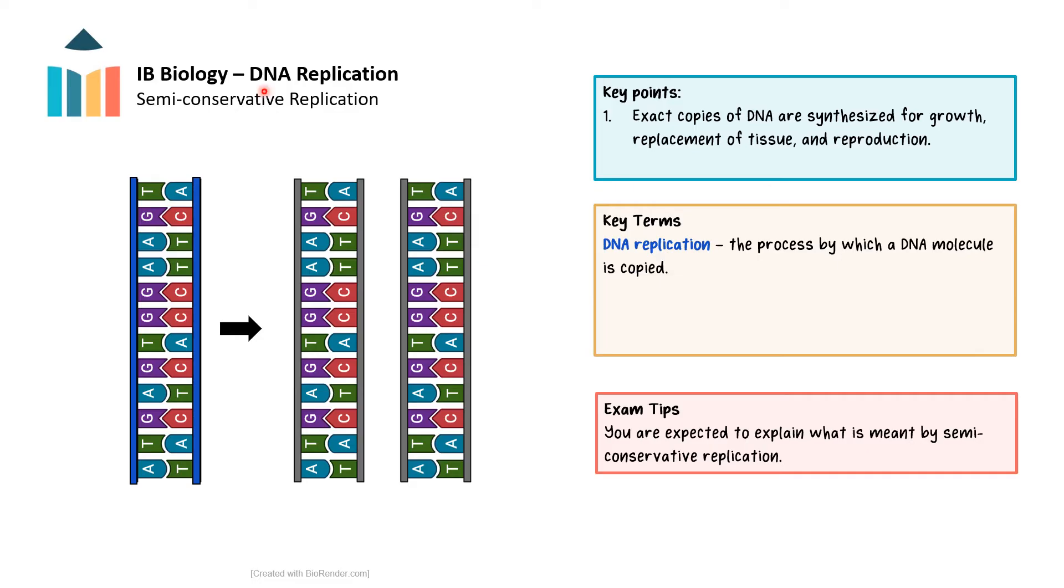DNA replication is the process by which a molecule of DNA replicates to produce two identical copies of DNA. This ensures the transmission of genetic information from one generation to the next and ensures growth and maintenance of genetic continuity within an organism. Every cell formed during growth or tissue replacement carries a complete and identical set of genetic information identical to the parent cell.